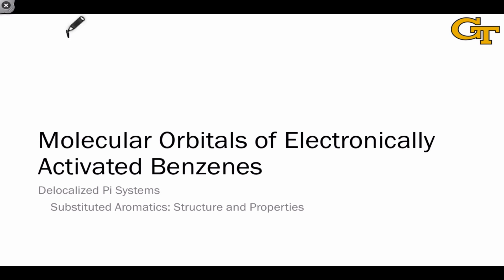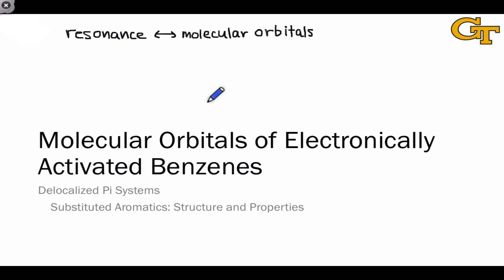Throughout our discussion of conjugated pi systems, one point we've returned to again and again is this idea that resonance is conceptually related to molecular orbital theory. In this video we're going to see this idea once again in the context of benzene rings substituted with electron donating and withdrawing groups. These groups have predictable and actually somewhat intuitive effects on the shapes of molecular orbitals if we take resonance into account.